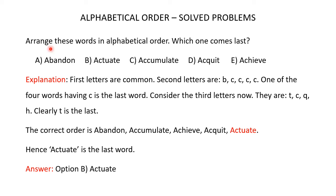Aren't these words in alphabetical order? Which one comes last? You are given 5 words: Abandon, Actuate, Accumulate, Acquit, and Achieve. You have to arrange these 5 words in alphabetical order and find out which of these words comes last. When you observe these 5 words, you will see that the first letter A is common in all 5 words.